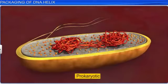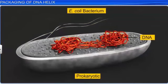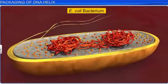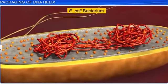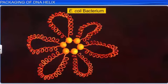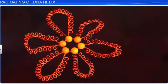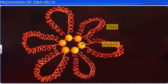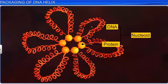In prokaryotes such as E. coli, the nucleus is not very well defined. However, the negatively charged DNA is not scattered throughout the cell, but is arranged in large loops, held together by a few positively charged proteins in a region known as the nucleoid.